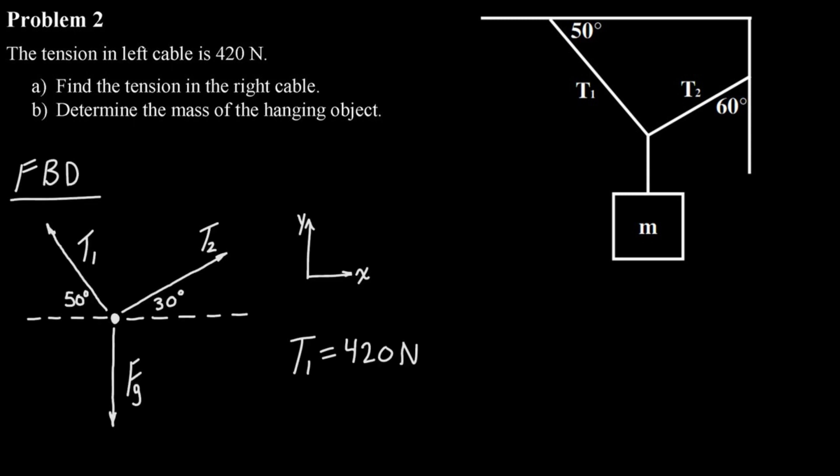The first thing we want to do for any static equilibrium problem is to start with a good free body diagram. We're going to take the point where all three of those ropes connect and use that as the center of our free body diagram. Now we've got the force of gravity going downwards, so that's going to be due to the mass which is hanging down.